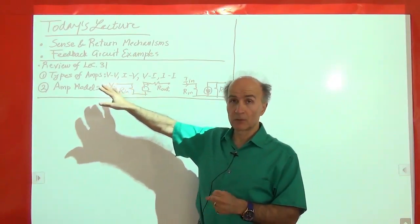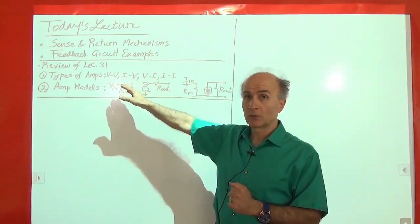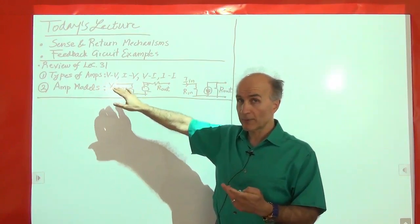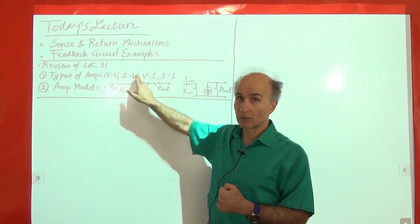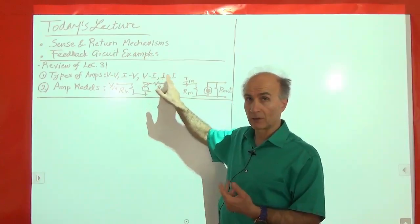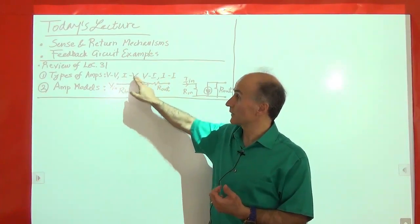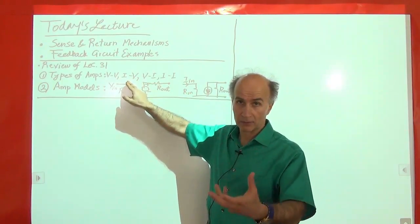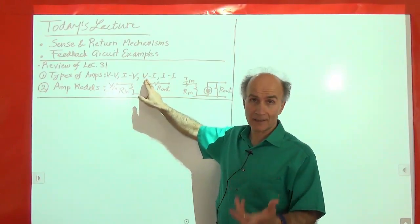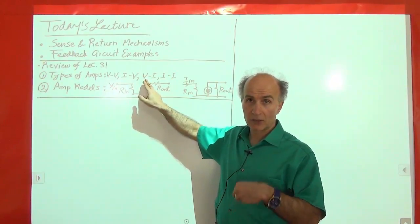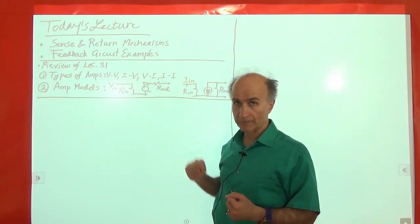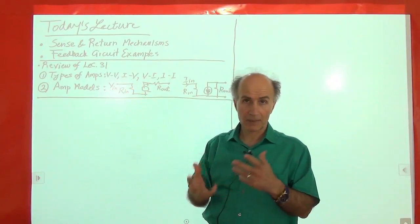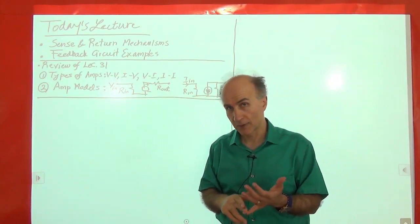Last time we talked about types of amplifiers. There are four types: voltage in, voltage out; current in, voltage out (trans-impedance amplifier, which receives a current and generates a voltage); voltage in, current out (trans-conductance amplifier); and current in, current out. We also looked at the models of these amplifiers in terms of basic elements such as voltage and current sources and resistors.